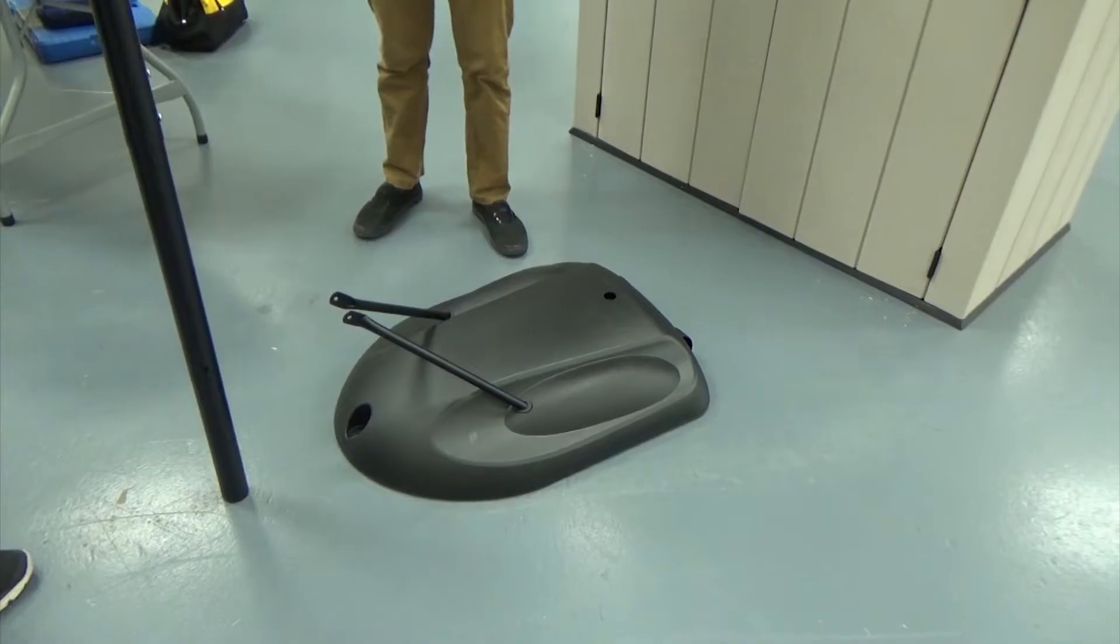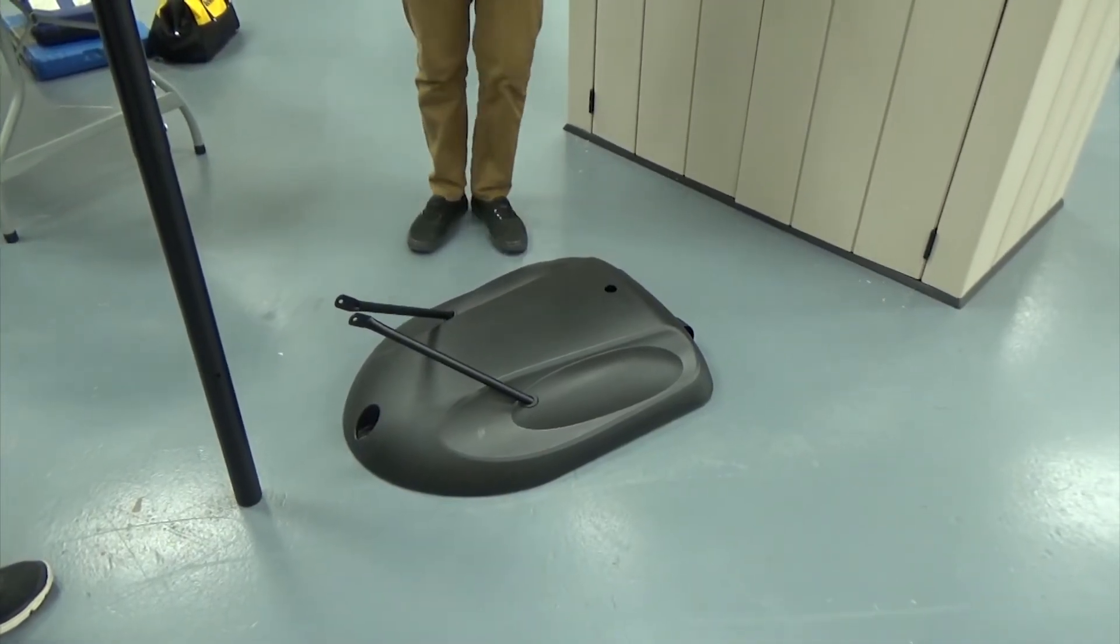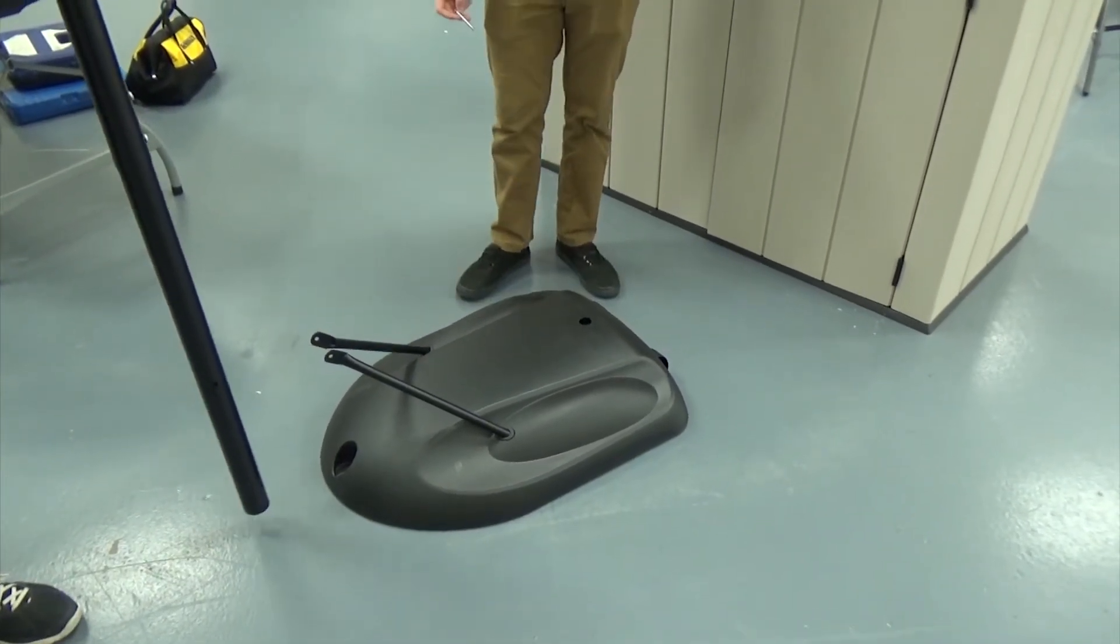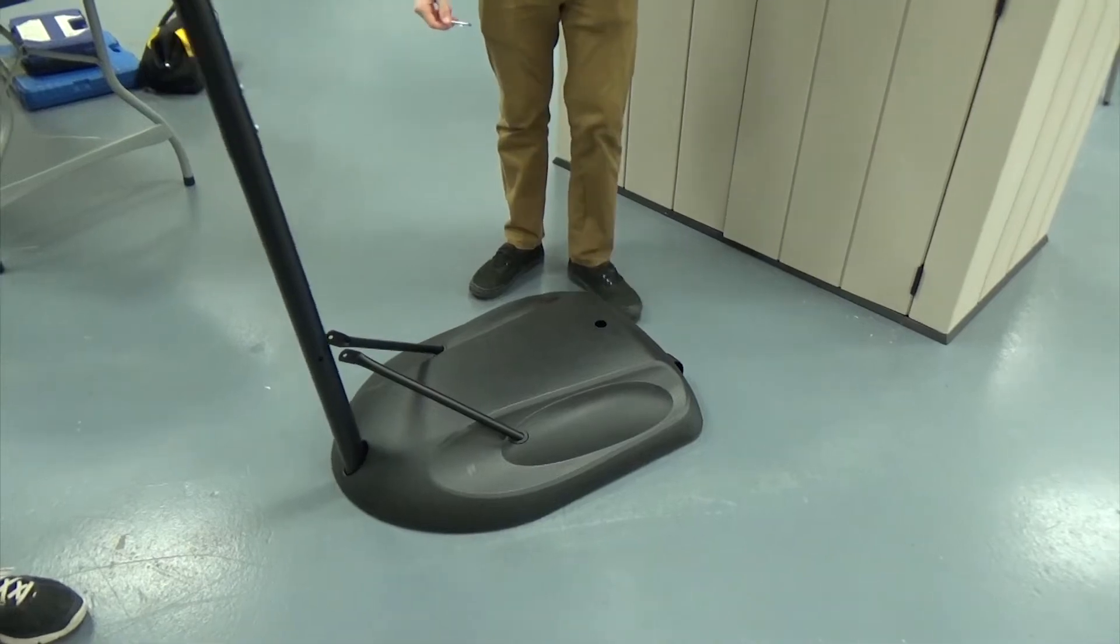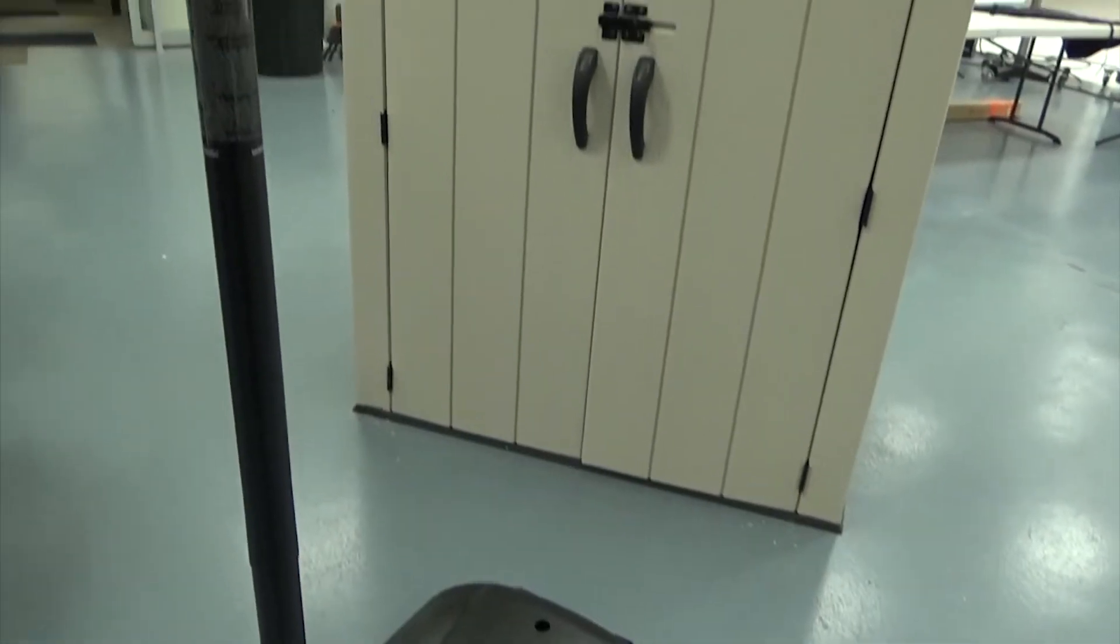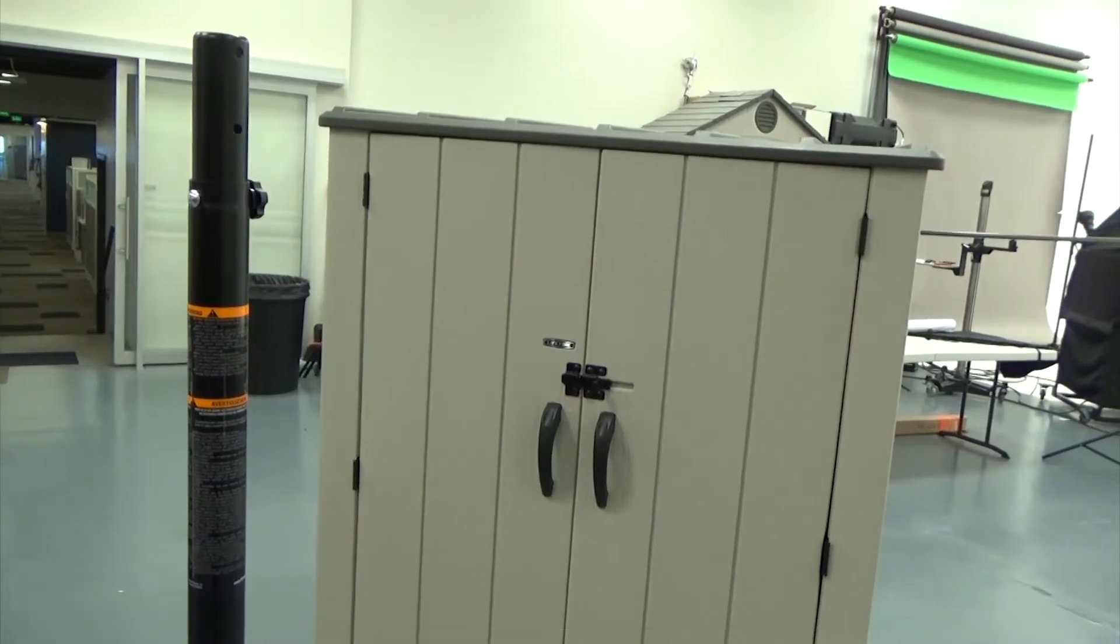Next, position the bottom of the pole assembly into the recess on the base. Line up the holes in the braces with those in the bottom pole, and make sure the adjustment knob is facing back towards the base.